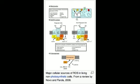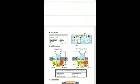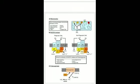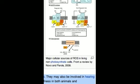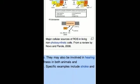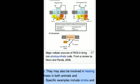Reactive oxygen species, ROS, are chemically reactive molecules containing oxygen. Examples include oxygen ions and peroxides. ROS form as a natural byproduct of the normal metabolism of oxygen and have important roles in cell signaling and homeostasis.